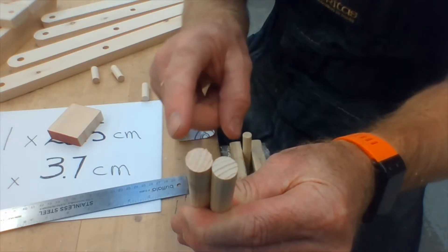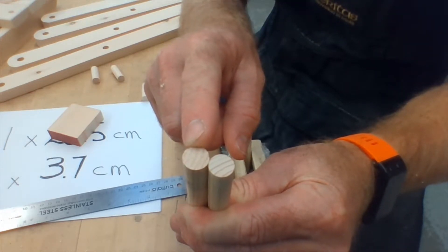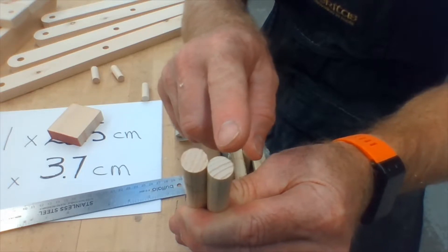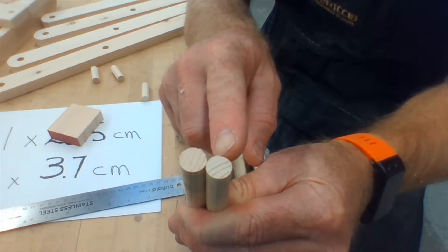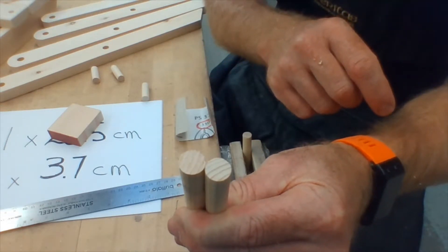Once you've cut your dowels, they will look like this here with cut marks and a rough end. We'd like to make them look like this one which has been sanded with 150 grit to remove any of the machine marks and give it a nice clean appearance.